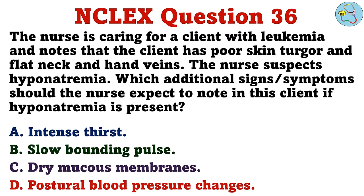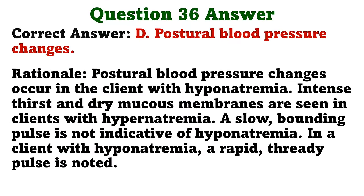The nurse is caring for a client with leukemia and notes that the client has poor skin turgor and flat neck and hand veins. The nurse suspects hyponatremia. Which additional signs and symptoms should the nurse expect to note in this client if hyponatremia is present? A. Intense thirst. B. Slow bounding pulse. C. Dry mucous membranes. D. Postural blood pressure changes. The correct answer is D: postural blood pressure changes. Postural blood pressure changes occur in the client with hyponatremia. Intense thirst and dry mucous membranes are seen in clients with hypernatremia. A slow, bounding pulse is not indicative of hyponatremia. In a client with hyponatremia, a rapid, thready pulse is noted.